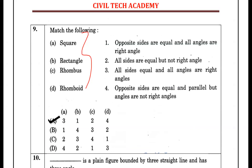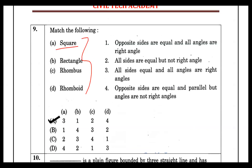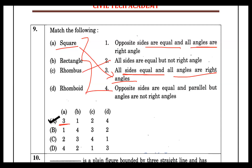The square has all sides equal and all right angles. The rectangle has opposite sides equal but all angles are right angles. The rhombus has all sides equal but the angles are not right angles. The parallelogram has opposite sides equal but not right angles.